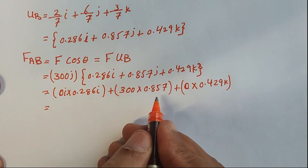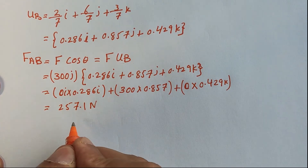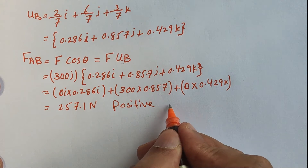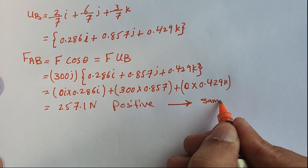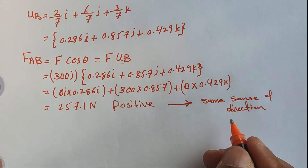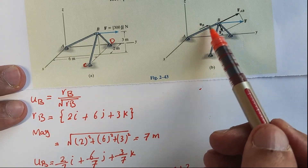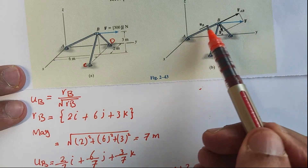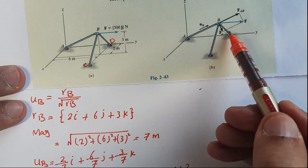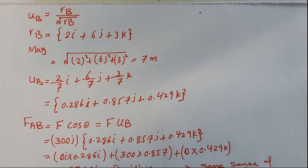300 times 0.857 equals 257.1 Newtons. This force is positive, meaning it has the same sense of direction as the force applied. Since it's positive and along û_B with the same direction as the force applied, we can now make two rectangular components of this force.